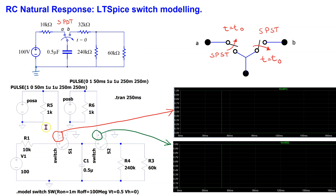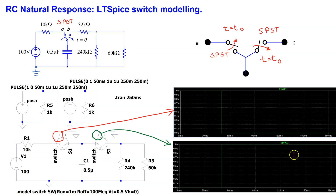Pulse sources are set up to control the switch behavior. For the switch at position A: VINITIAL is 1, VON is 0, time delay is 50 ms, rise and fall times are 1 microsecond, and the ON time and time period are 250 ms equal to the total simulation time. These settings mean the switch is initially ON and becomes OFF after 50 ms. For the switch at position B, the pulse settings are configured so this switch is initially OFF and then becomes ON at 50 ms.